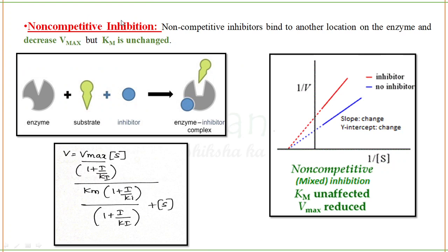Next is non-competitive inhibition. In non-competitive inhibition, the inhibitor binds to another location on the enzyme — an allosteric site. When the inhibitor binds at that other location, it changes the conformation of the enzyme so the enzyme is no longer compatible with the substrate, and the substrate cannot bind. This causes the rate of reaction to decrease and Vmax will decrease, but Km will not change — Km is unchanged in non-competitive inhibition.